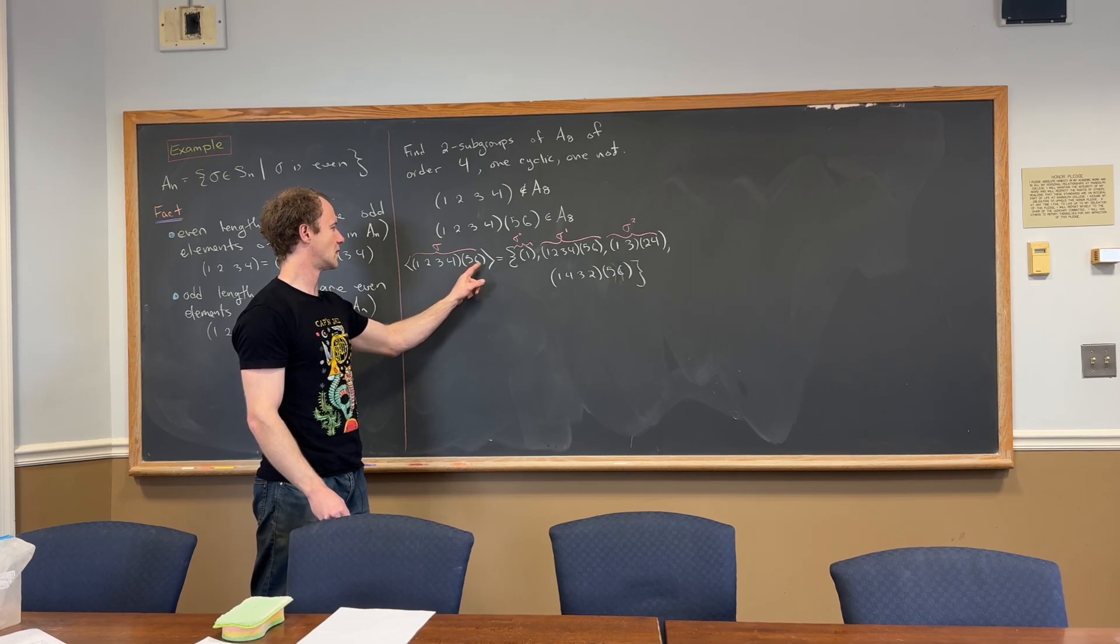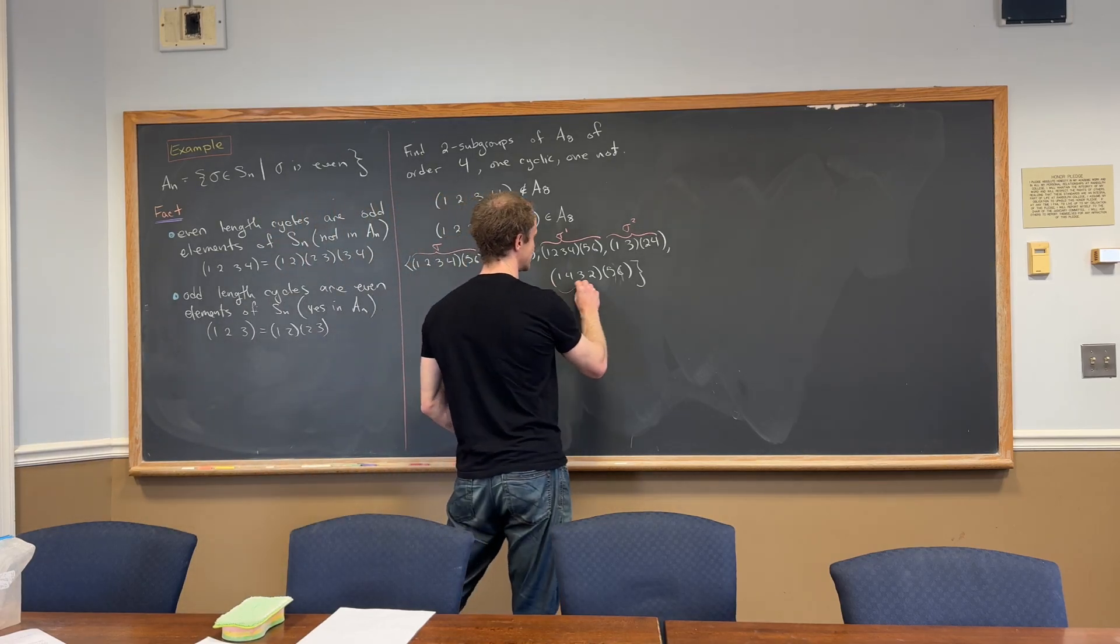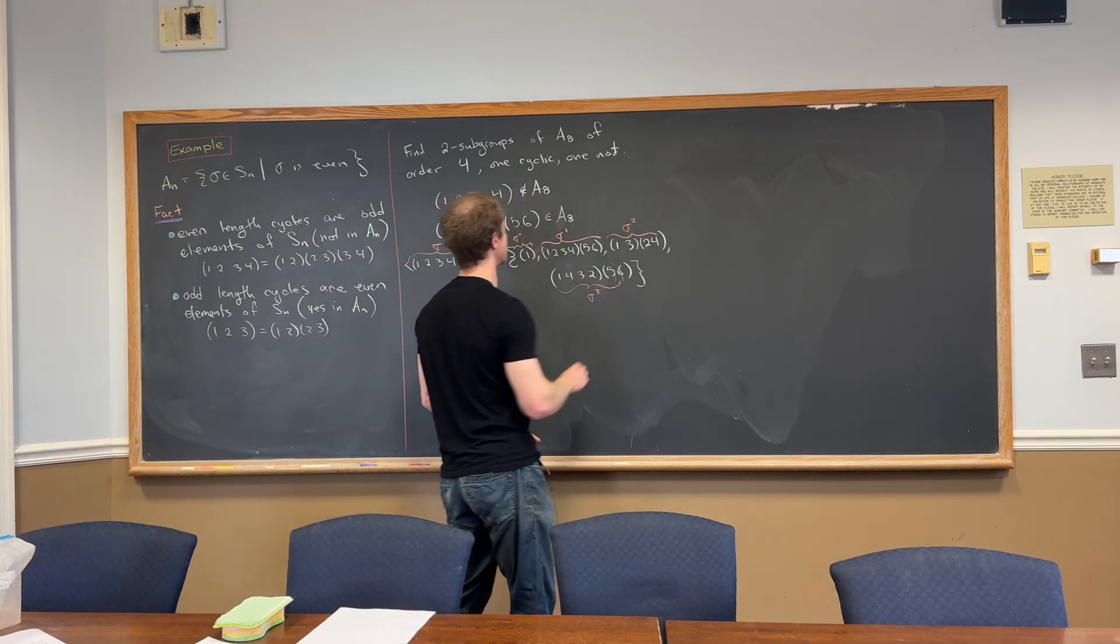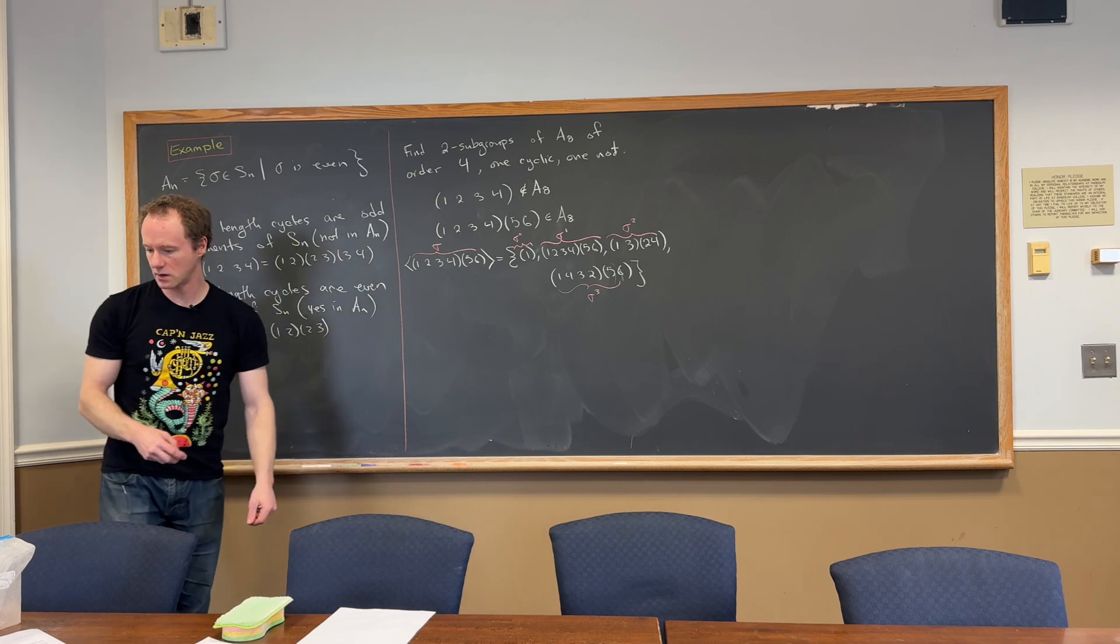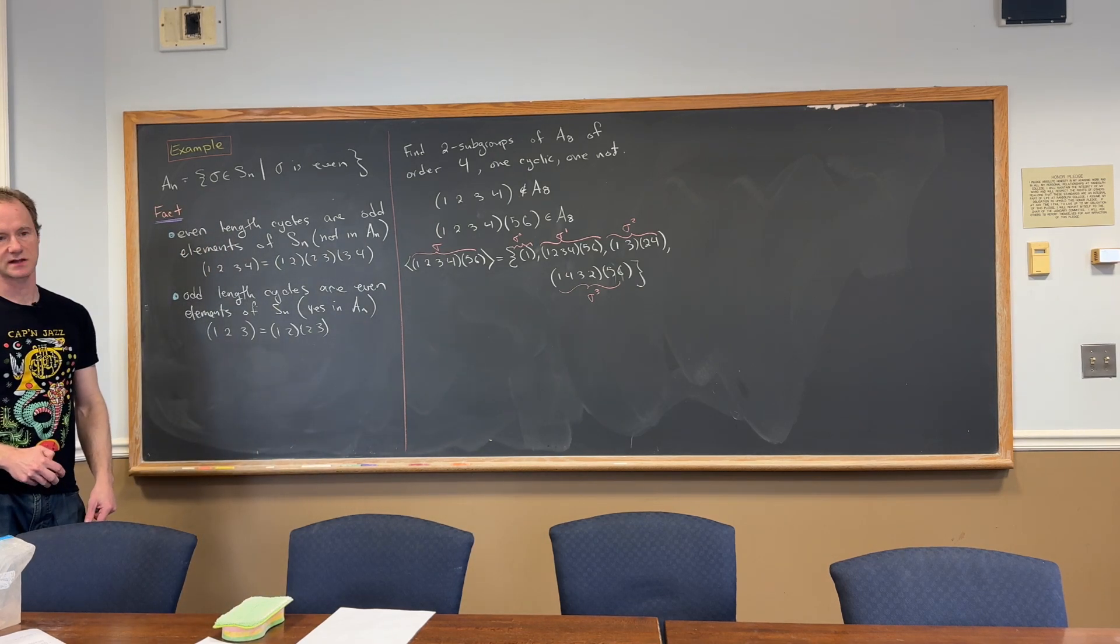How would it go? So we go 1, 2, 3. It goes back to 6. Okay. So anyway, this one is sigma cubed. Okay. So there is our subgroup of order 4 that is cyclic.